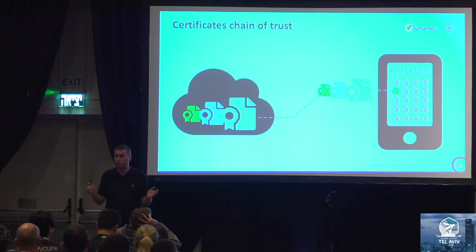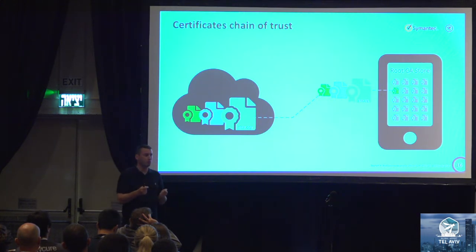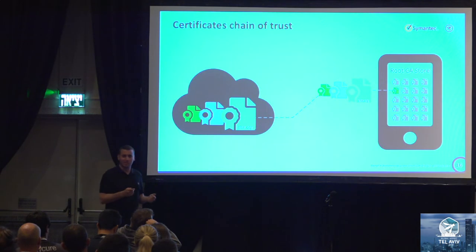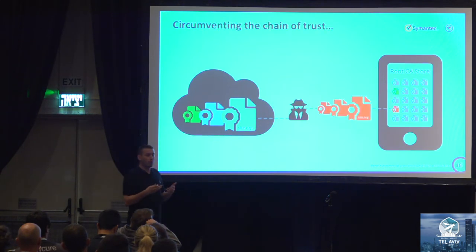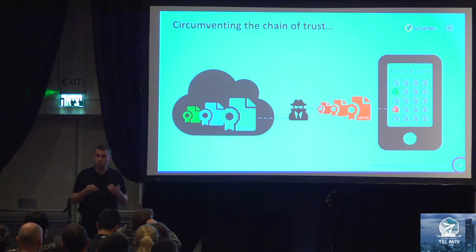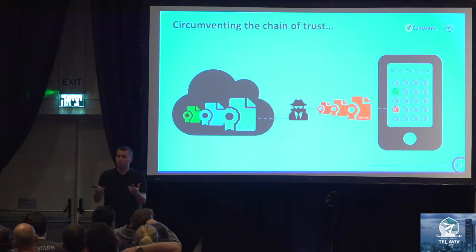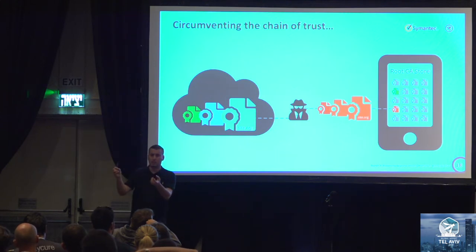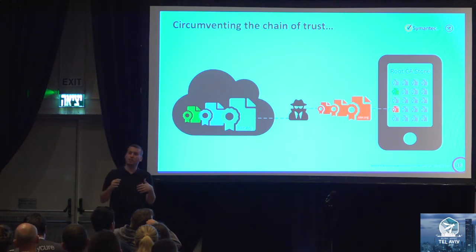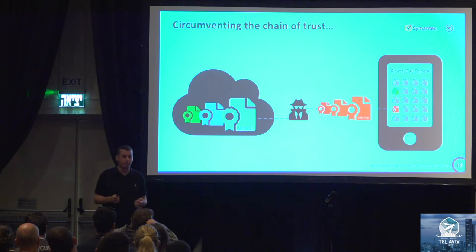The big problem is that as encryption went up, attackers started to focus on the weak point in that model — the list of trusted CAs. By exploiting security issues or using social engineering, attackers focused on getting a malicious root CA into the trusted list. From that moment, the whole model fails because a man-in-the-middle attacker can provide an invalid certificate signed by the malicious root CA, and from the client's perspective everything looks legit.